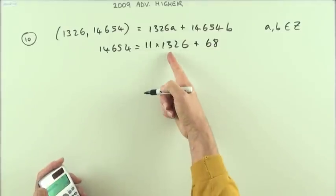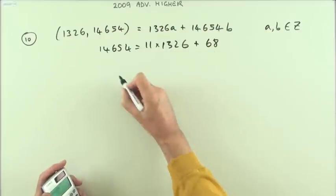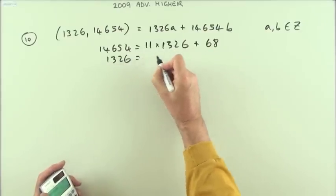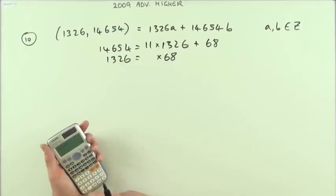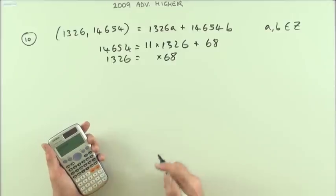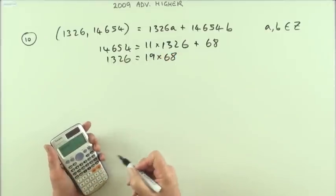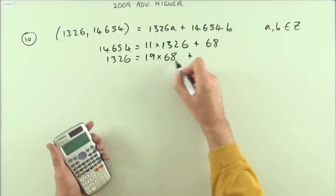Then you can repeat the process. 1326 is bigger than that, so 1326 must be some multiple of it. What multiple is it? 19.5, so it's 19 times, oh, 0.5, that's easier, so that'll be plus a 34.